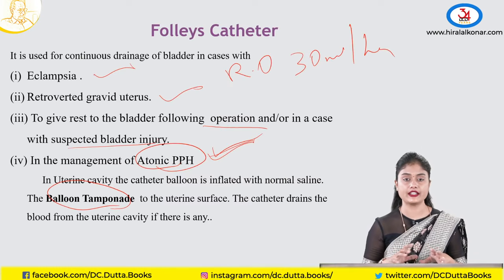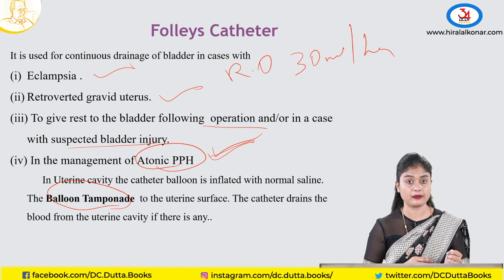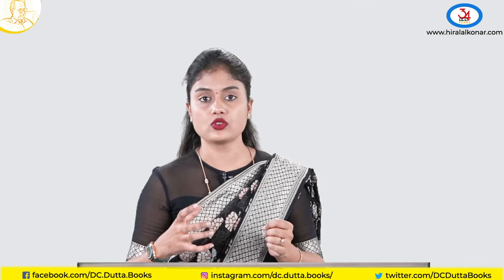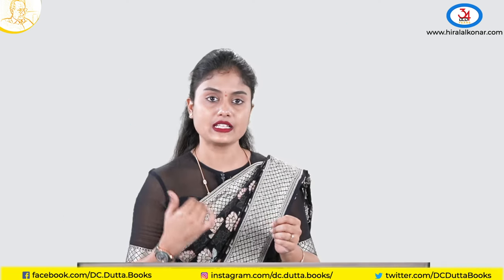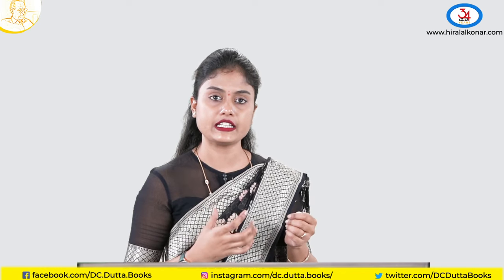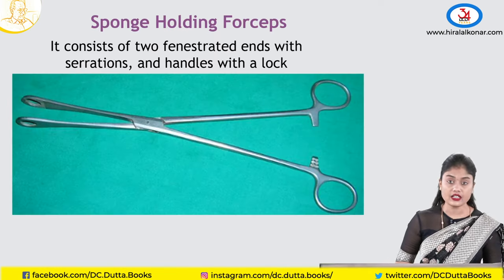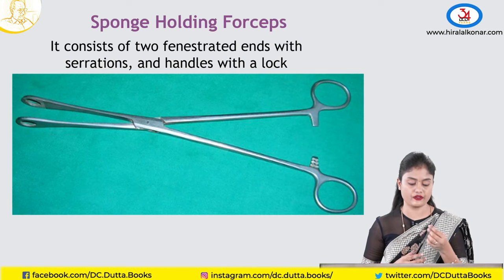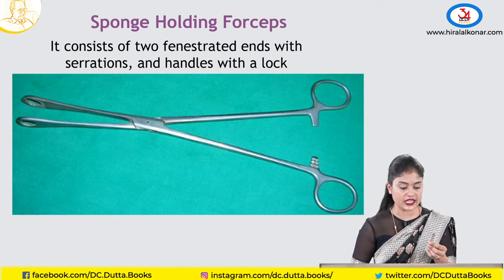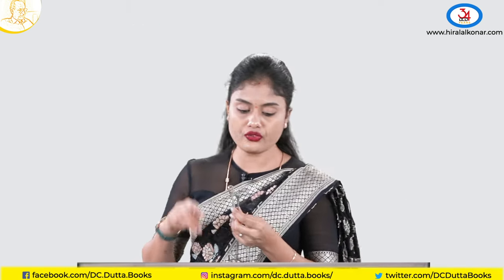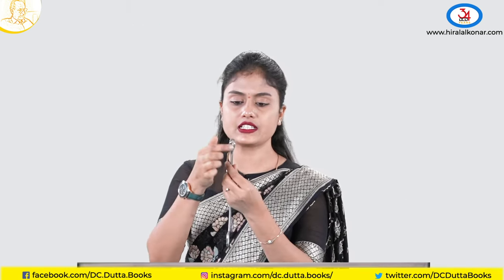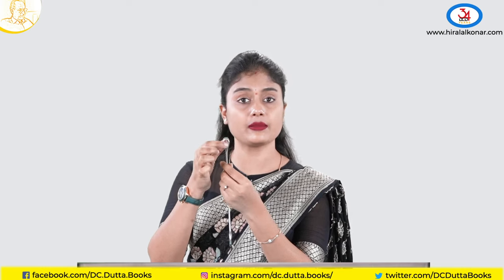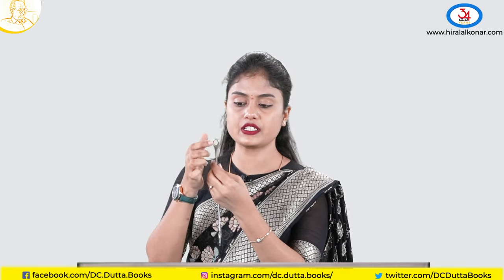So we now know about the bladder and its instruments — draining the bladder in labour makes descent easier and faster. Coming to the sponge holding forceps. You can see it has two fenestrated ends — there are holes at the tip of the instrument. Fenestration means the gap or hole.